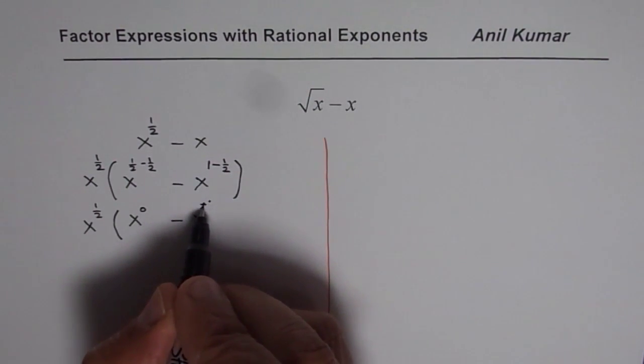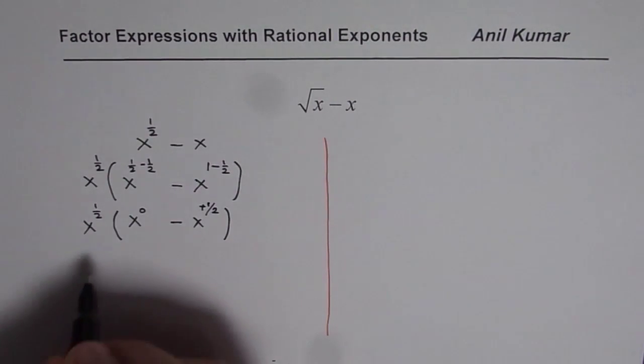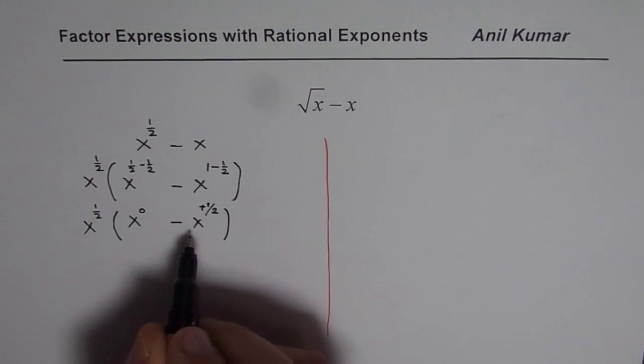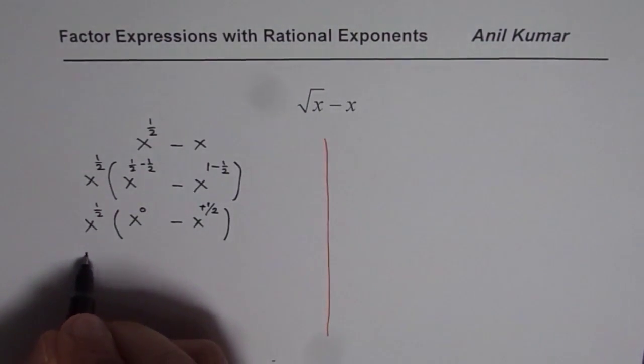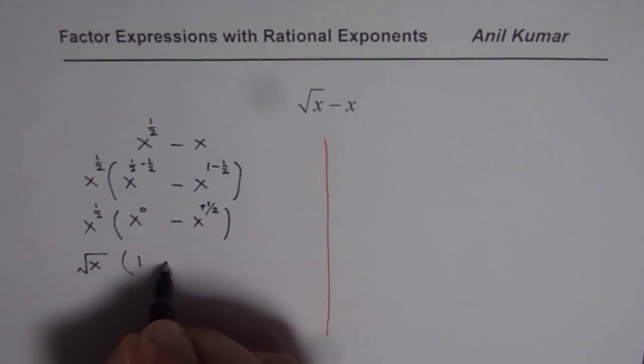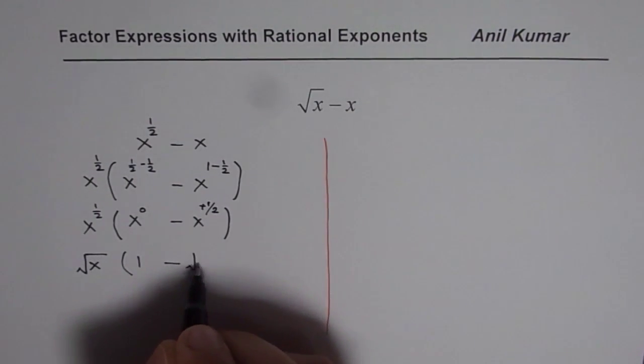I mean plus 1/2. 1 - 1/2 is plus 1/2. Now anything to the power of 0 is 1, and this is x^(1/2). We can write it back in that form, which is √x(1 - √x).